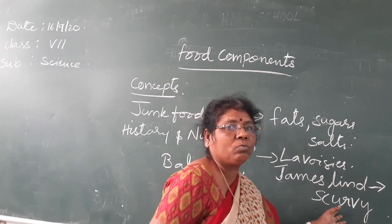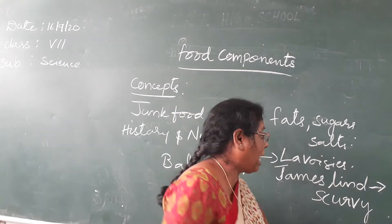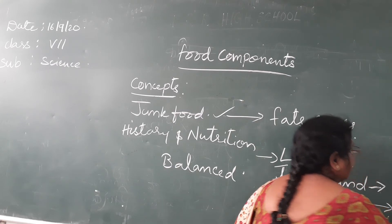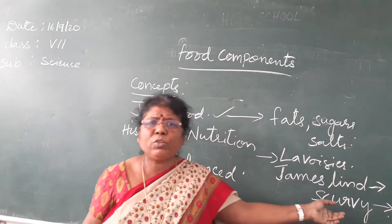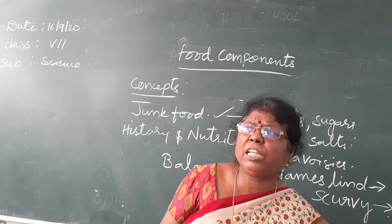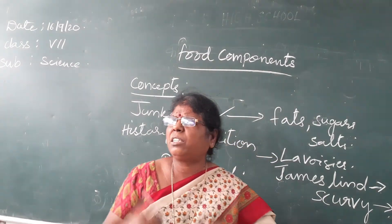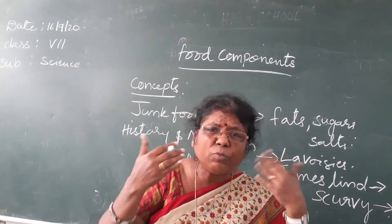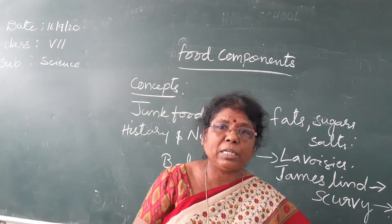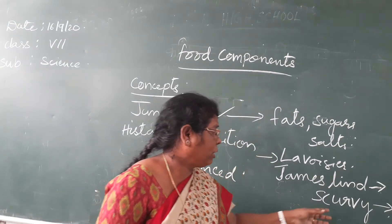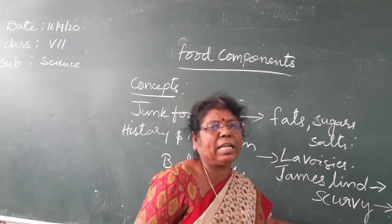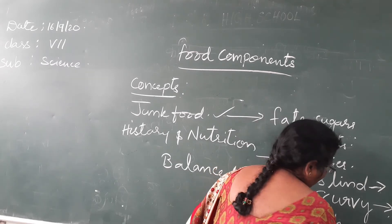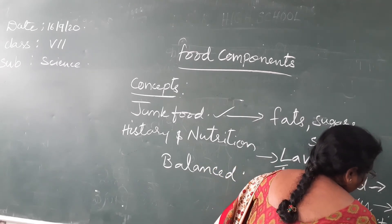What is scurvy? It is a disease due to lack of vitamin C in our diet. What are the symptoms of scurvy? Bleeding gums, fatigue — which means laziness and tiredness — and nausea, where you feel symptoms of vomiting. How can you cure scurvy? By taking fresh fruits and vegetables, the disease can be cured.